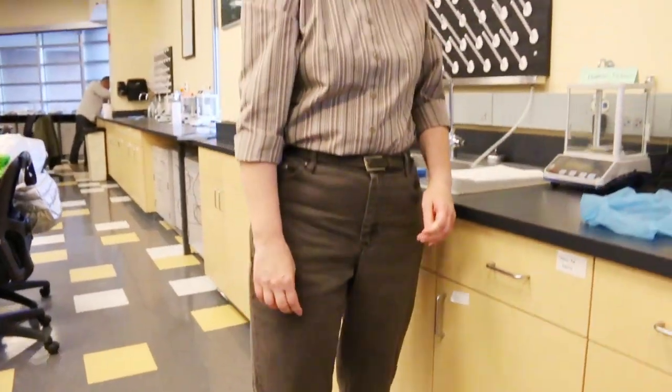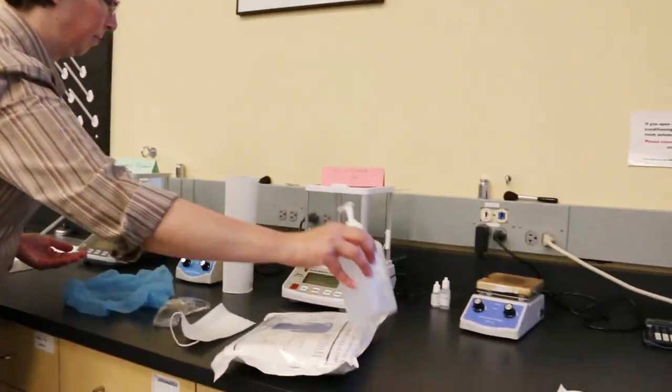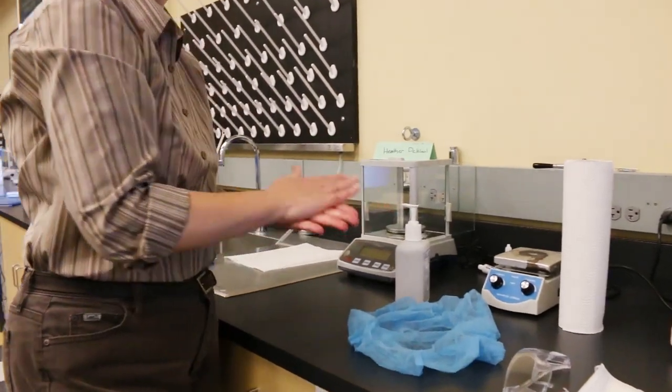Step 5 is to reapply sterile, foamed, 70% isopropyl alcohol to your hands and allow that to dry.